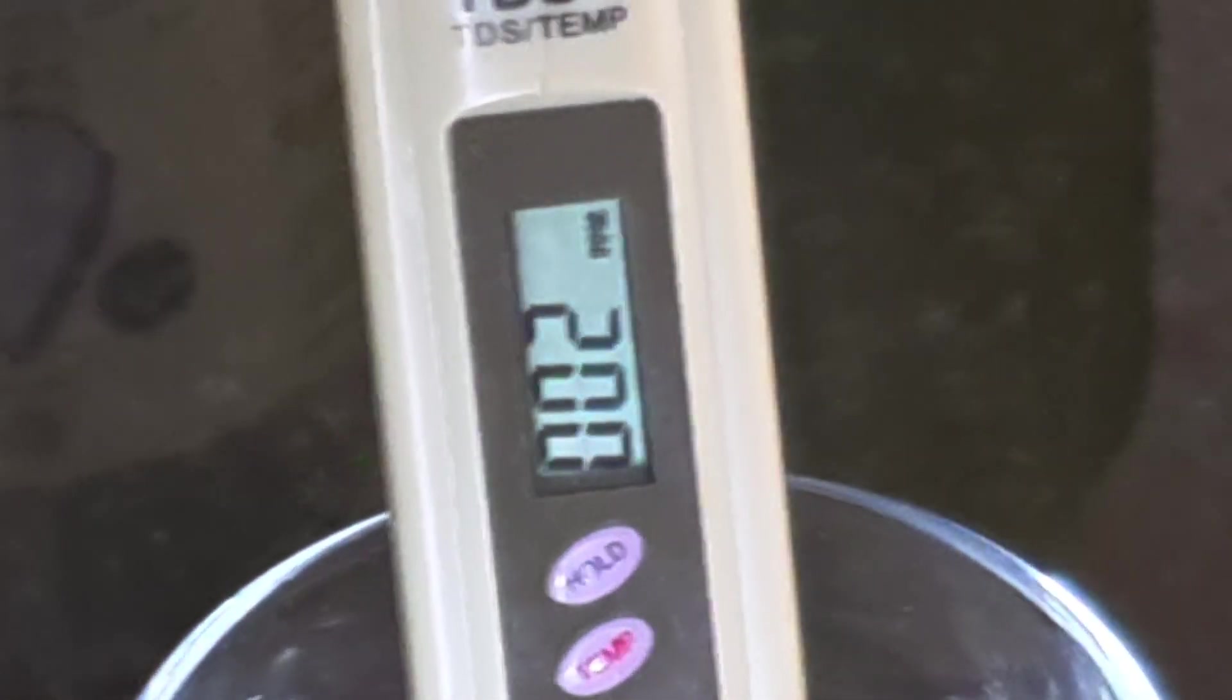It would be great if the battery ran out today. There we go. Can you see that? Zero. So we're going to pop it in the distilled and then try and get a reading from that. Okay, there you can see the reading is 002 parts per million. Okay, that's not 200, it's 002. There you go. That's 002. That's distilled.